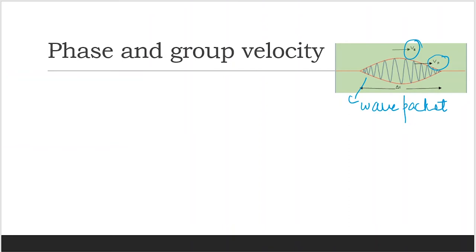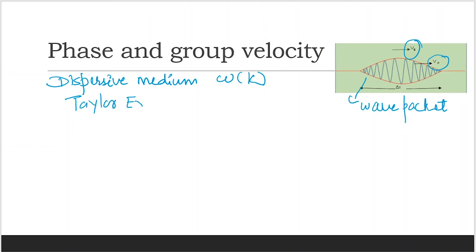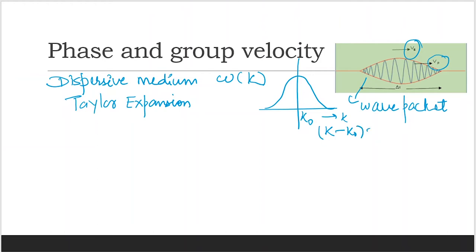In a dispersive medium, harmonics of different frequencies move with different velocities. We need to derive the expression for omega(k), where omega is a function of k. We can use the Taylor expansion because if we take a wave packet with a peak at k-naught, then k minus k-naught is a narrow width, so the Taylor expansion is applicable.